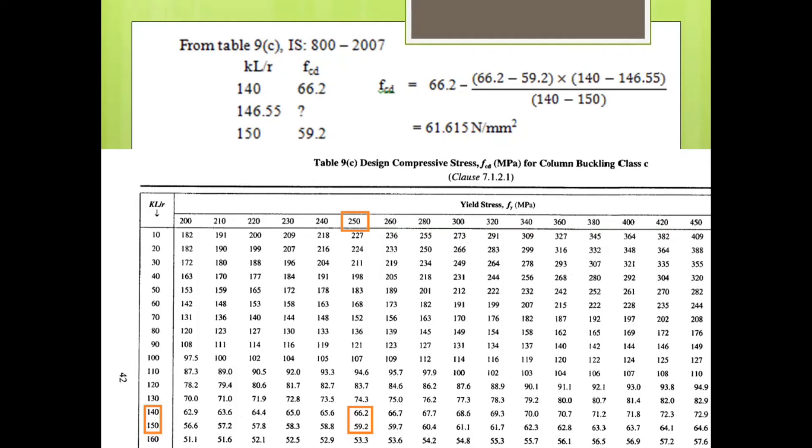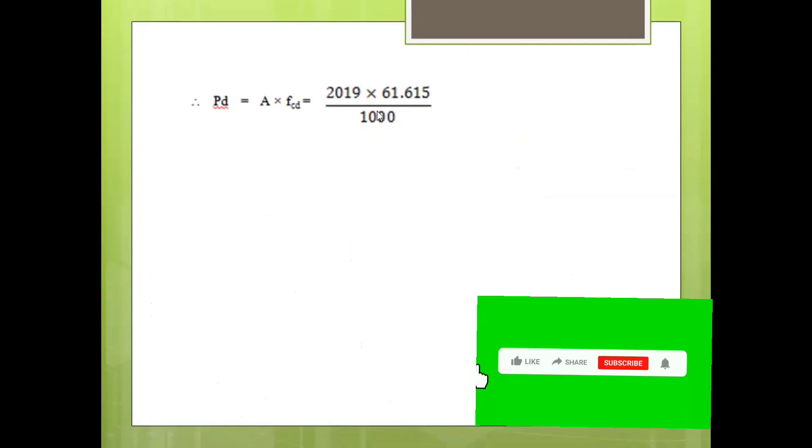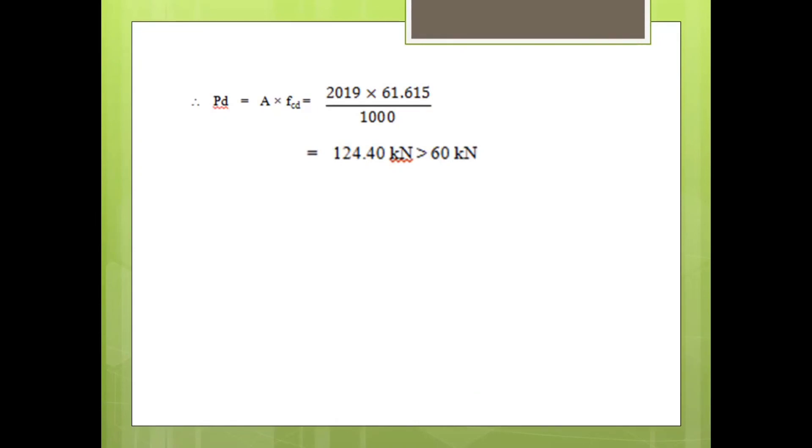After this, we just substitute this value for evaluating the compression load carrying capacity of the section that is calculated using area into stress. Area of the selected section is 2019 that we have already seen. And FCD is 61.615, which is calculated in the previous step. Convert this load in kilonewton, so divided by 1000. So you will get 124.4 kilonewton as the design load carrying capacity. And it has to resist 60 kilonewton only. So selected section is able to resist 60 kilonewton load because its capacity is 124.4.